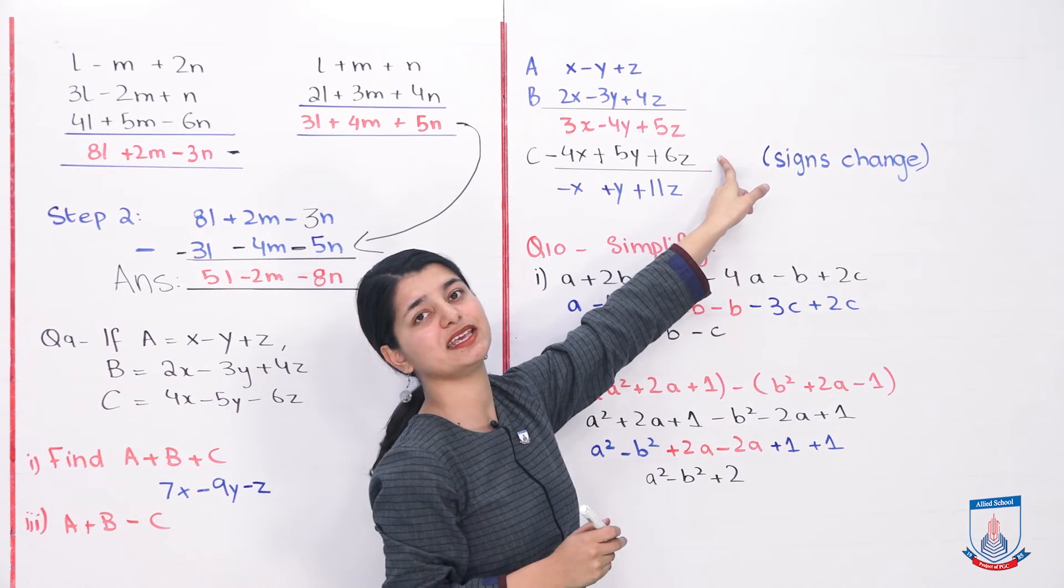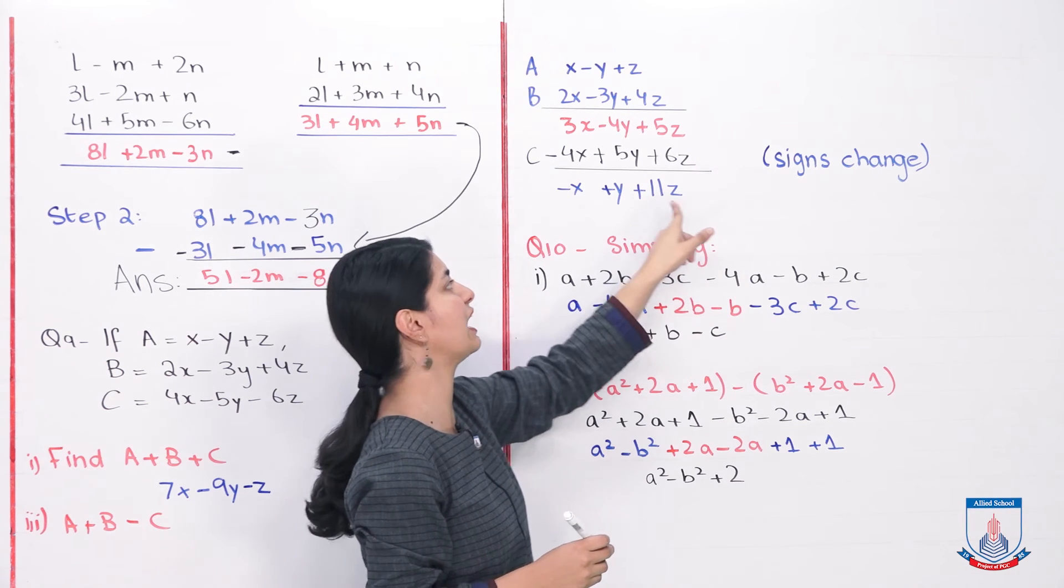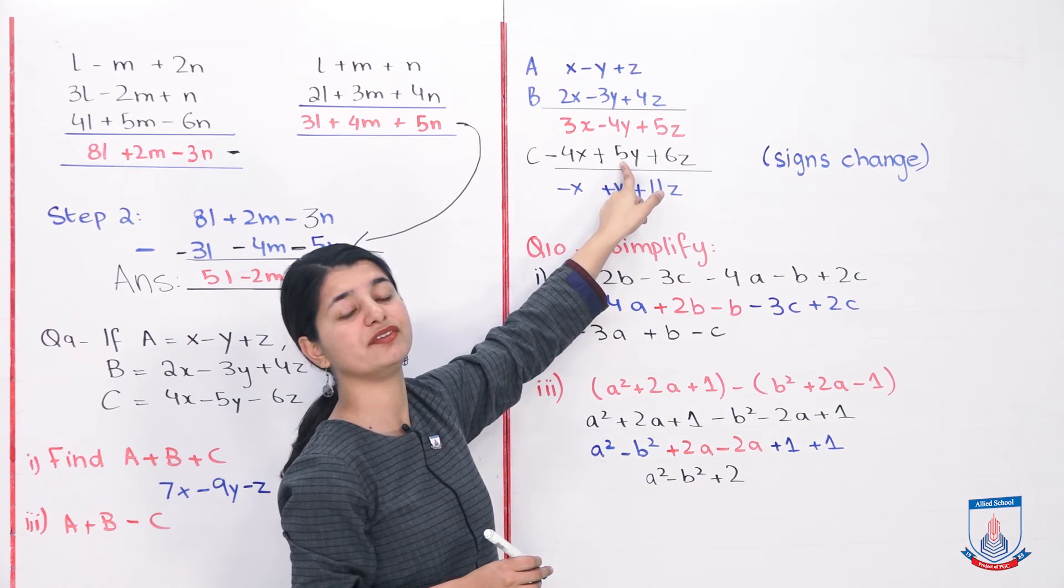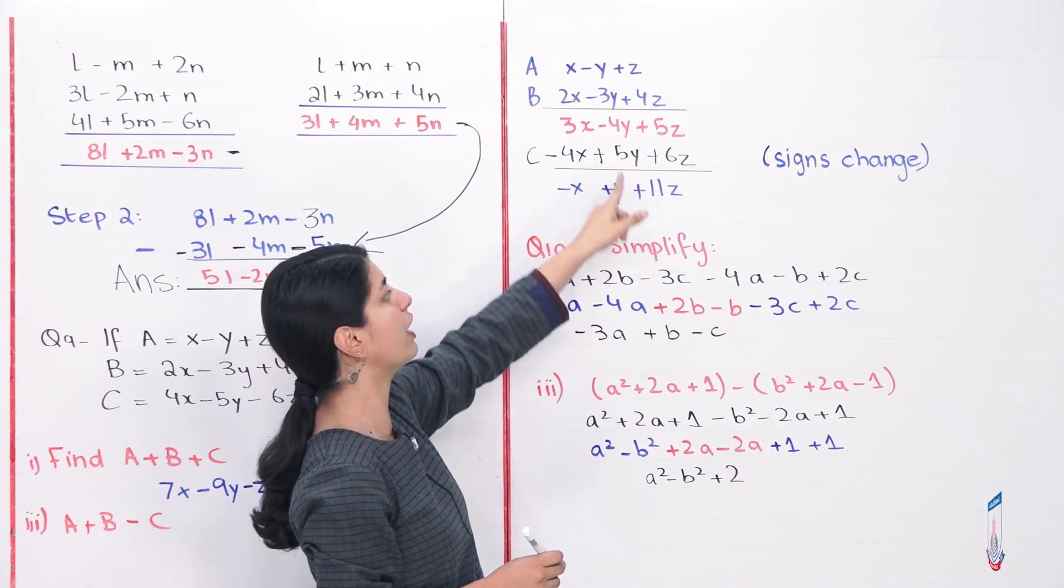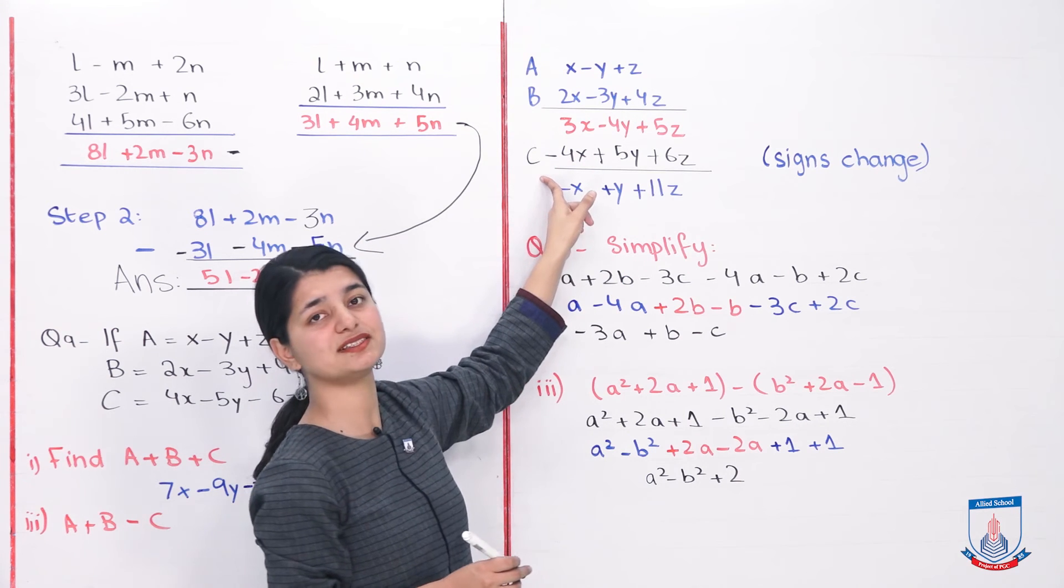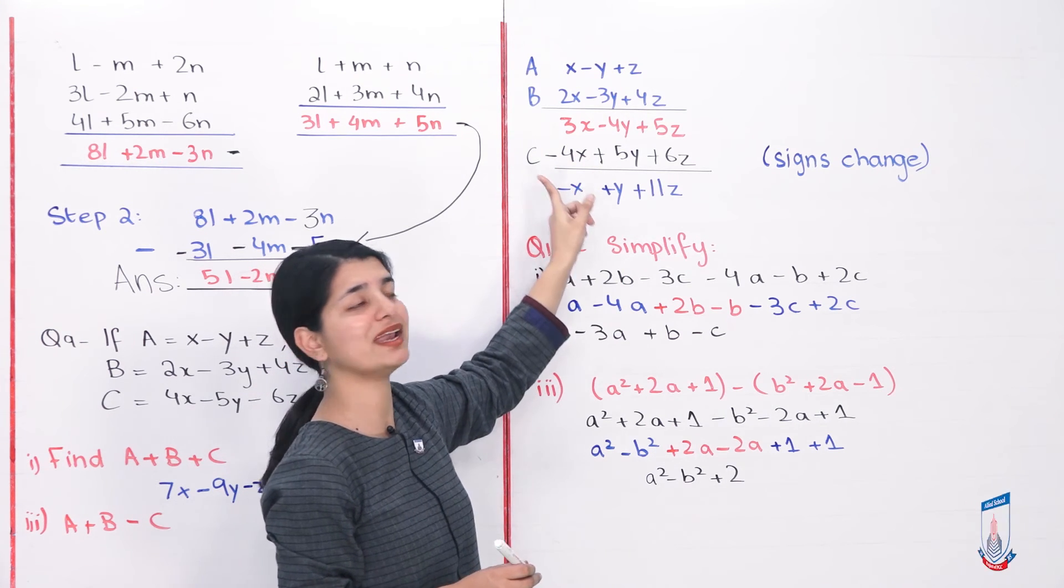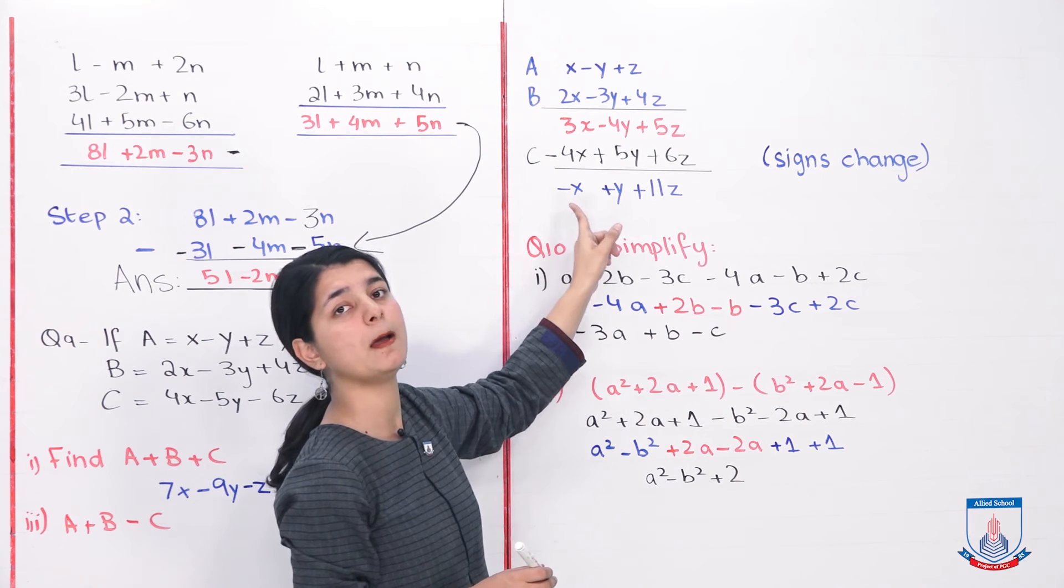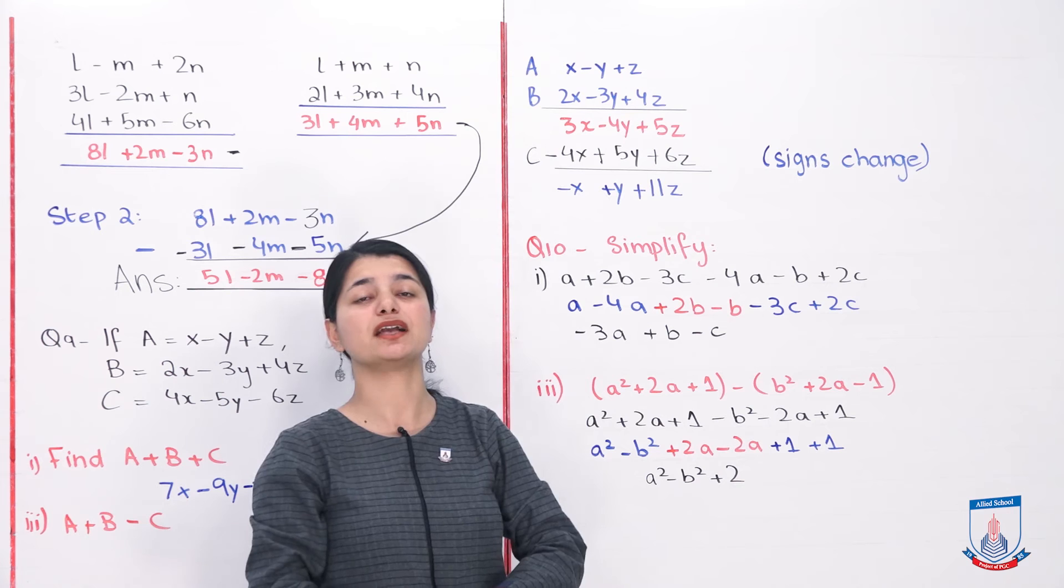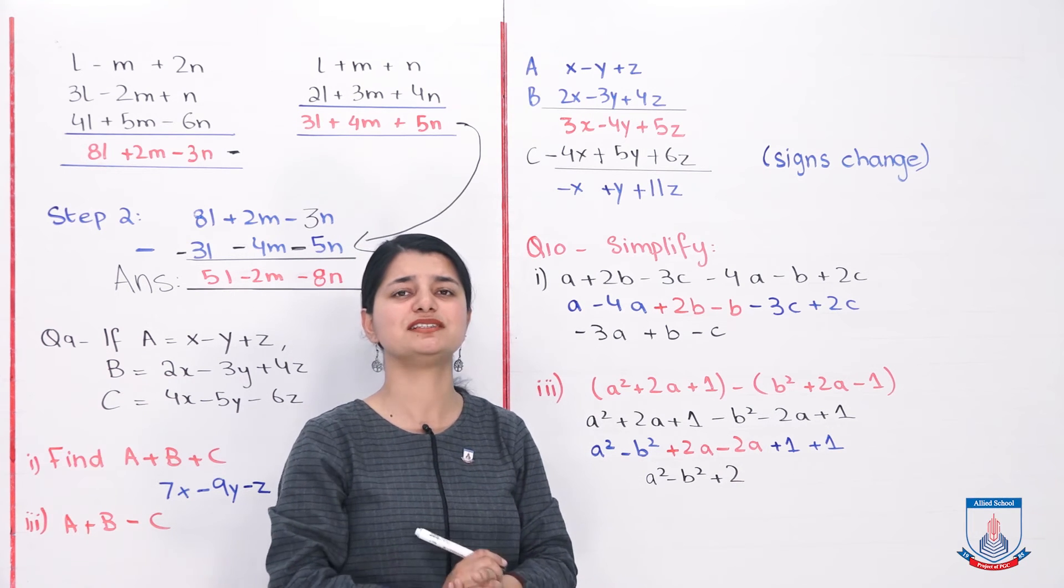Now when we add them, 5Z plus 6Z what became? Both have positive with them, 11Z. Minus 4Y, positive 5Y. Both are different signs, they will subtract. And we will have left only 1Y. And then 3X minus 4X different signs, subtraction, minus X. So what is your answer? Minus X plus Y plus 11Z. That is how you had to solve question number 9. And it wasn't difficult at all. They just indicated the expressions to you with letters. That A is this expression, B is this expression. But it's the same thing you have to do, that we've been doing in this exercise so far.